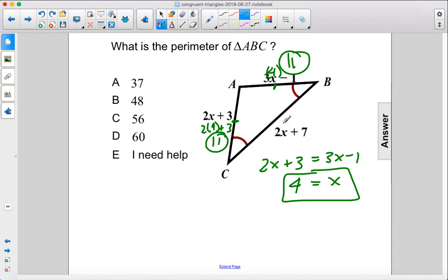Here, we have 2 times 4, which is 8, plus 7, which is 15. So, if we take 11 plus 11 plus 15, we get 37. The answer is A.